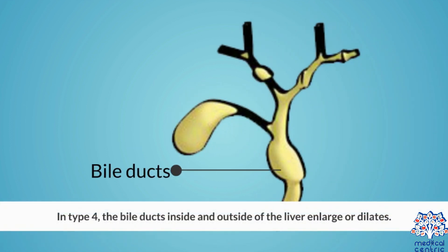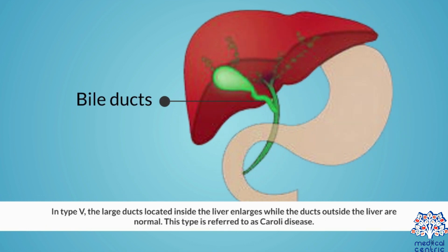In Type 4, the bile ducts inside and outside of the liver enlarge, or dilate. In Type 5, the large ducts located inside the liver enlarge, while the ducts outside the liver are normal. This type is referred to as Caroli disease.